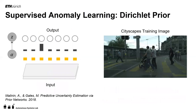All the techniques discussed so far don't need out-of-distribution training data, which makes sense because if they are called out-of-distribution, it's because we don't have access to them. But there are other classes of techniques where we can have a proxy for out-of-distribution data. One I will mention briefly is using a Dirichlet prior — having priors on out-of-distribution samples.